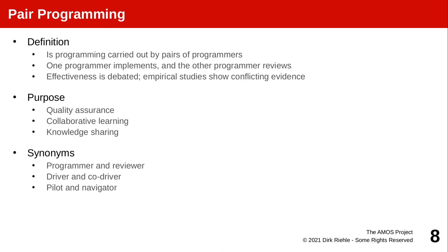The purpose of pair programming is first of all assuring the quality of the code being written. In general, less code may be written than if you had these two people work independently. But having them work together, the quality of the code is likely to be much higher, creating fewer bugs and hence being much more hassle-free long-term. By now the empirical evidence suggests that a pair of programmers is more effective in total than two individual people. Another purpose is that in the collaboration around the code there is collaborative learning.